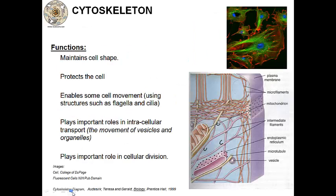The next structure is the cytoskeleton. It's a little more complicated in eukaryotic cells than in prokaryotic cells. It helps to maintain cell shape, protects the cell, and has some movement involved. For example, flagella and cilia are extensions of the cytoskeleton to help move the cell around. It also helps to move things within the cell — vesicles and other cell parts move along little tracks of the cytoskeleton — and it helps the cell to divide.